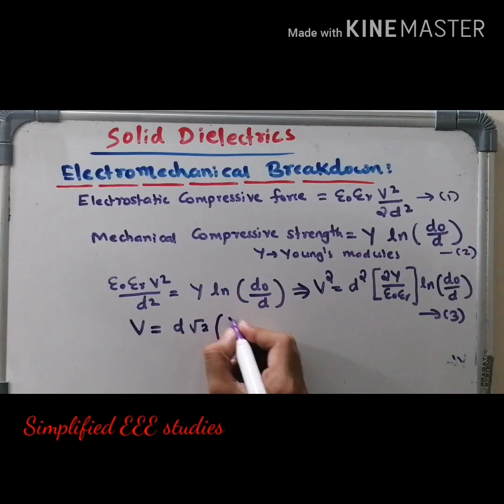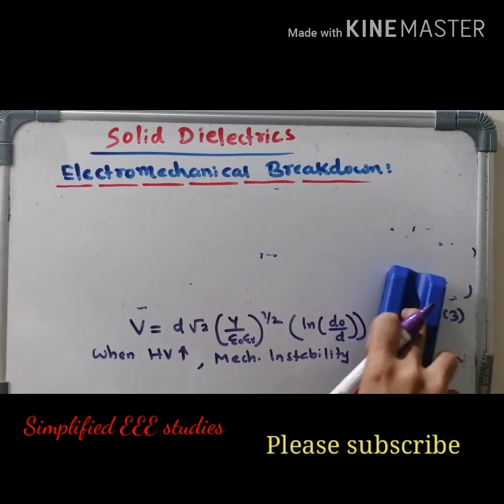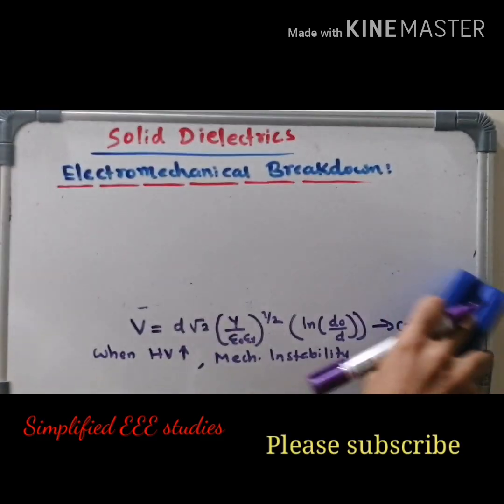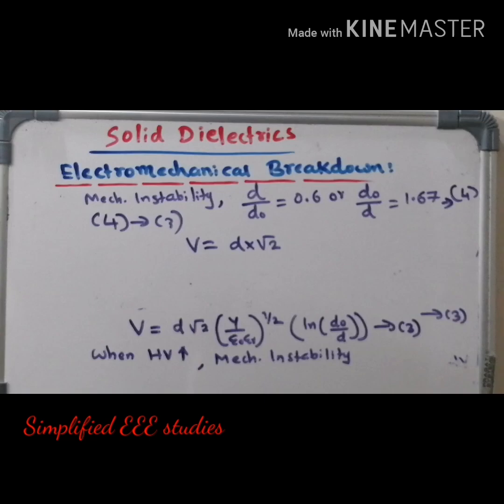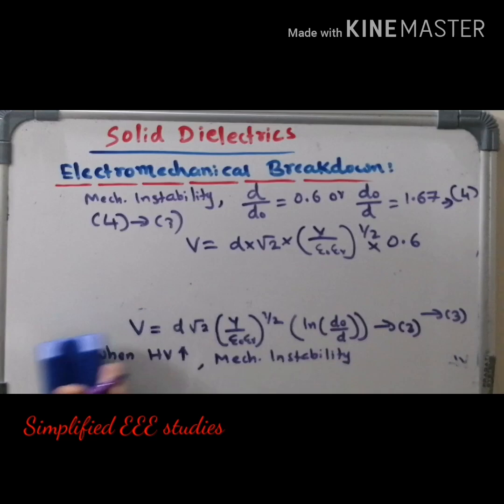When mechanical instability occurs, I can write one expression: D/D₀ = 0.6, or equivalently D₀/D = 1.67. This is one condition you are supposed to assume at the time of mechanical instability. Please call this equation number 4.